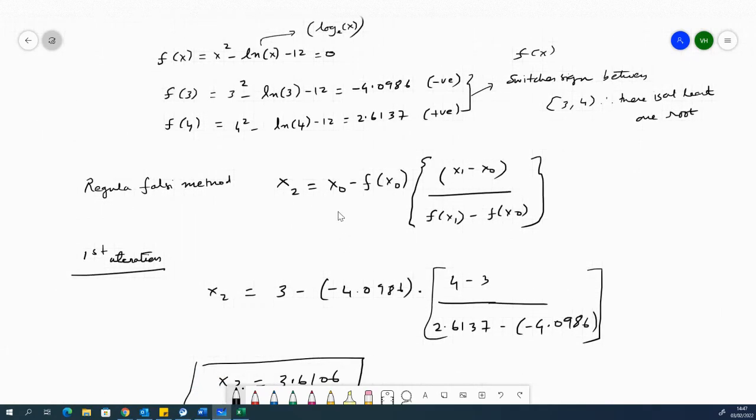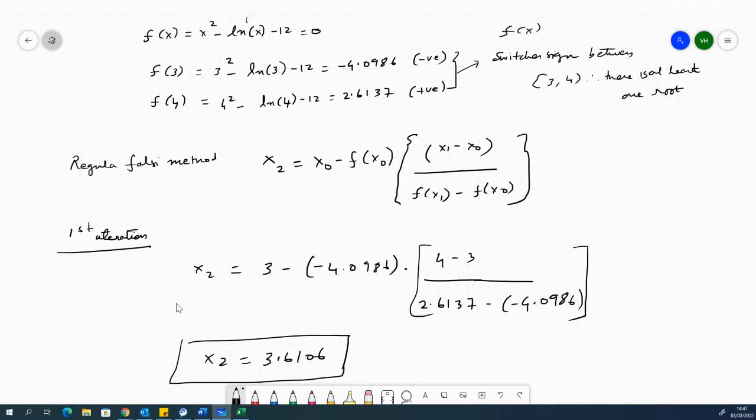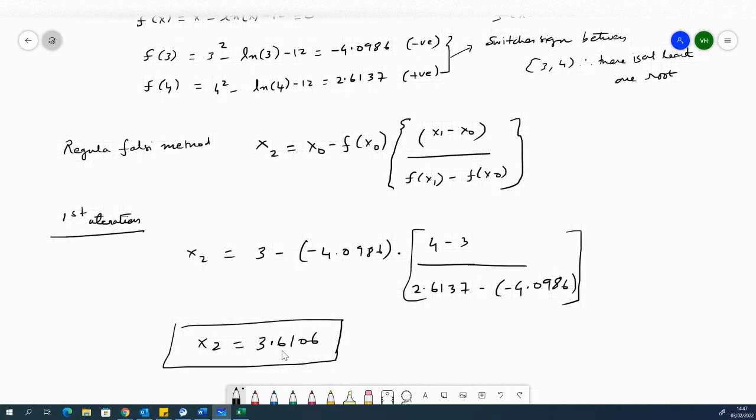Which would, in this case, mean x naught is 3, x1 would be 4. So therefore, if you applied this formula for finding x2, you would find that x2 equals to 3.6106.